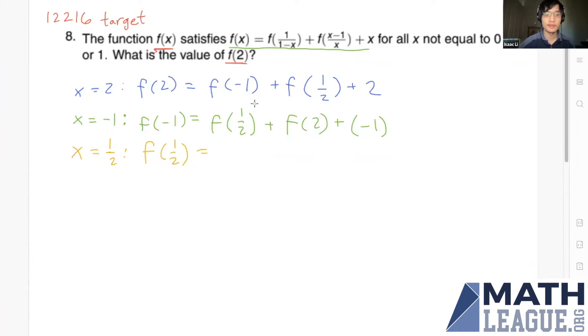For x = 1/2, we get f(1/2) = f(1/(1-1/2)) = f(2), plus f((1/2-1)/(1/2)) = f(-1), plus 1/2. This gives us a system of equations with unknowns f(2), f(-1), and f(1/2). We can solve this system to get f(2).